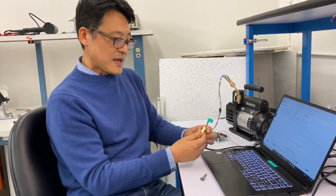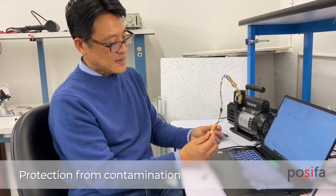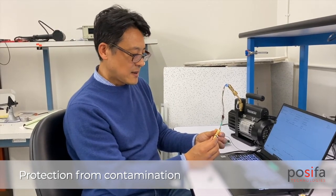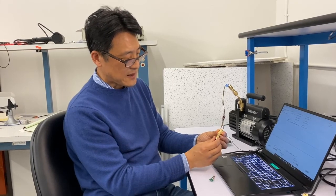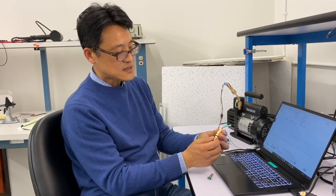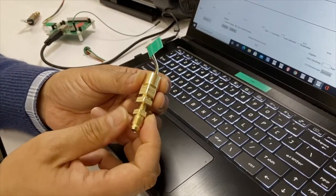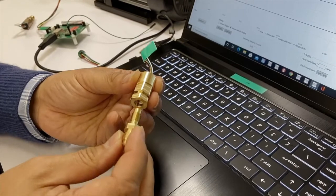Next, I'd like to demonstrate how this brass housing can prevent contamination from the environment to the sensing element. As you can see, this brass housing consists of two parts, the main body and the fitting adapter.